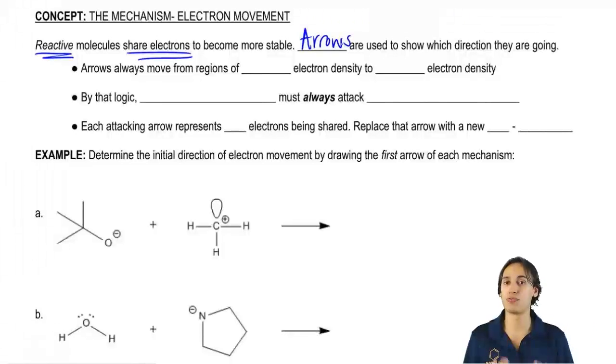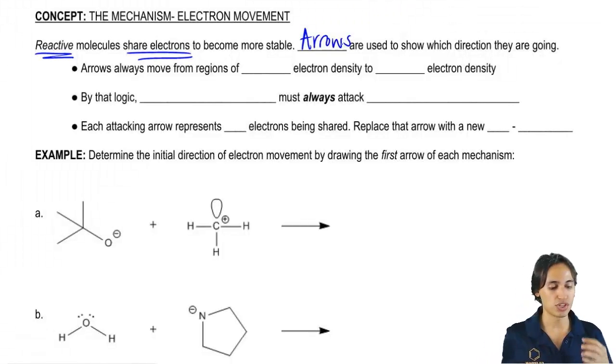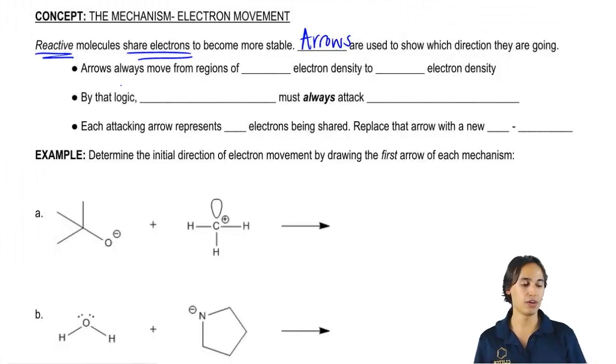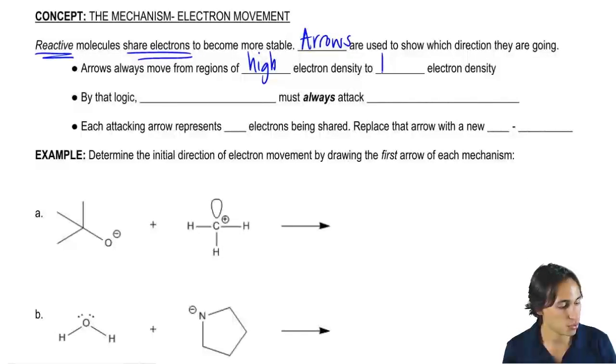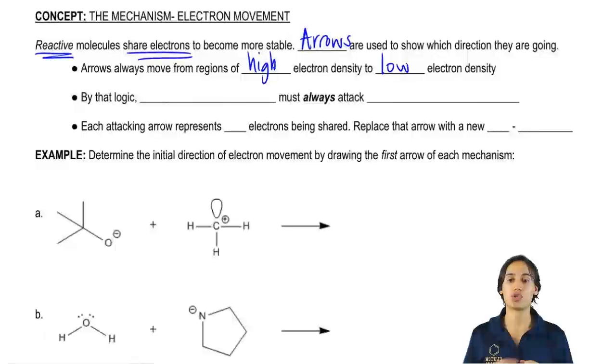So I just want to teach you guys or remind you a few things about the way that electrons move. And it turns out that these rules that I'm going to teach you are the same that we learned for resonance structures. Why? Because it turns out that resonance structures are the same thing in terms of that we're moving electrons from one atom to another. So let's go ahead and get started. So remember that arrows are always going to move from regions of high electron density to low electron density. So what that means is that we always want to start from the part of the molecule that has the most electrons and move to a part of the molecule that doesn't have a whole lot. This is the same thing that we did in resonance structures.